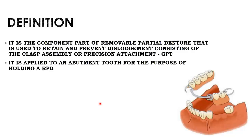Abutments are the teeth present adjacent to your edentulous space. These are the natural teeth present, and the direct retainers engage your abutment teeth and help to hold your RPD.